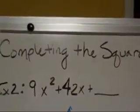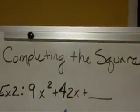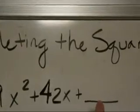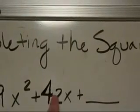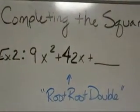Let's do another quick example of completing the square. Again, I'm trying to create a perfect square trinomial. Remember that I have to have a perfect square, a perfect square, root, root, double.